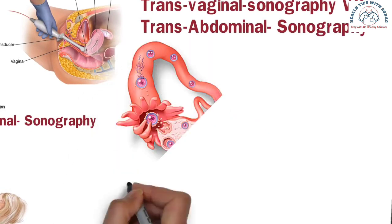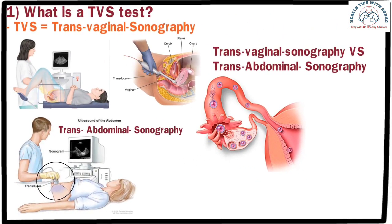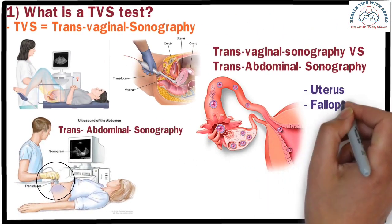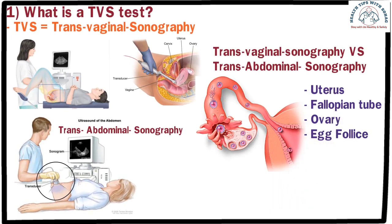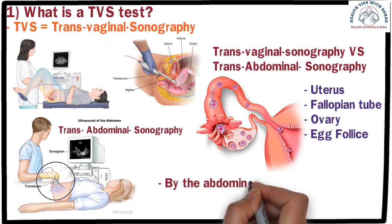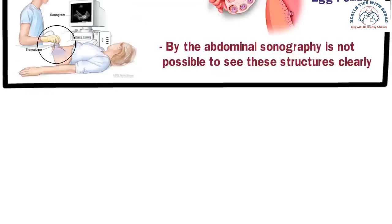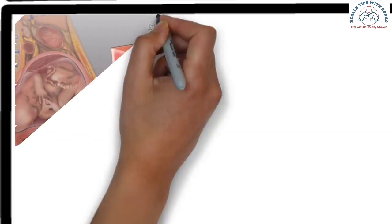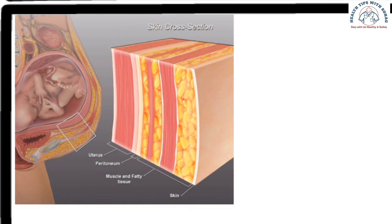However, if an ultrasound is done to determine infertility or pregnancy, specific organs such as the uterus, fallopian tubes, ovaries, and egg follicles need to be seen in detail. When a general ultrasound is done on the abdomen, it is not possible to see these structures clearly. The ultrasound probe goes through the fat tissue underneath the abdominal skin, then the muscle, and then many layers of membranes before reaching the uterus.